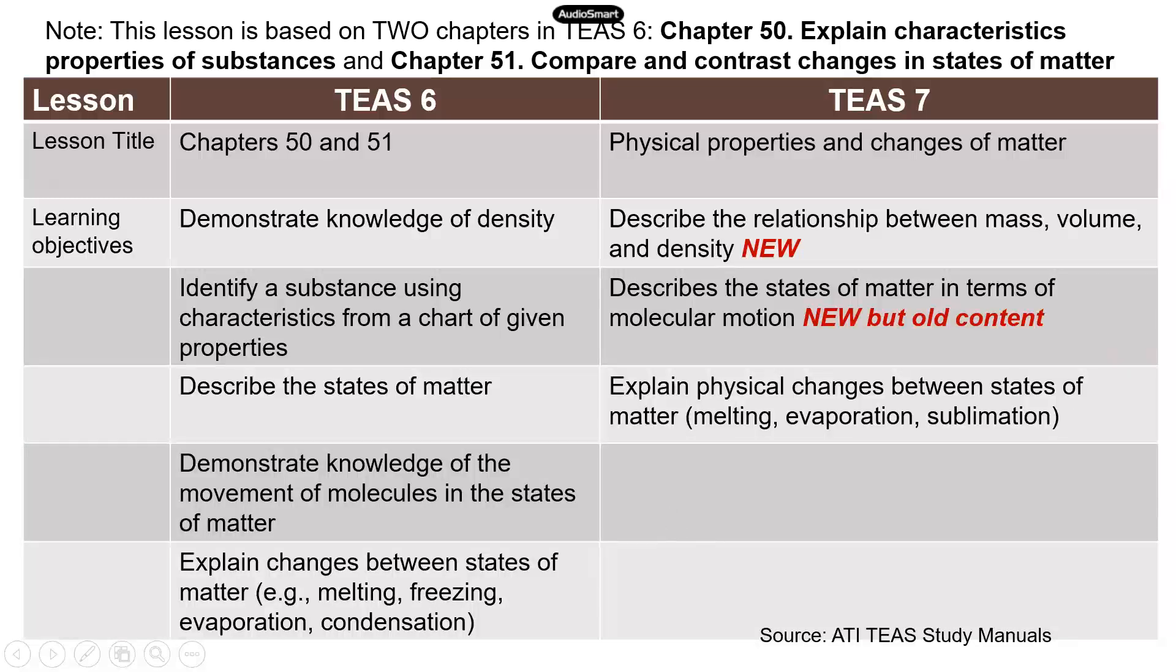So this is based on the content from those two chapters. You can see the only thing that's new is first, describe the relationship between mass, volume, and density. So you need to know the equation between the three properties and do some very simple calculations. It's not bad at all. The second is new-ish. Describe the state of matter in terms of molecular motion. So this is actually mentioned in TEAS 6, but it's just a new objective in TEAS 7.